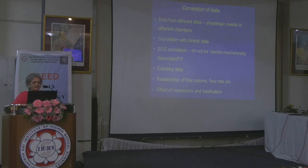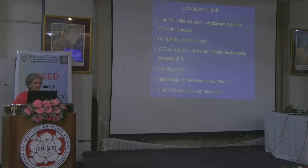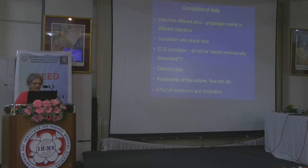Data from different sites — that is, physiological events in different chambers — you should know and correlate with the clinical data you have before going to the cath lab. You should always look at the ECG and correlate the pressure. Don't dissociate between the ECG and the pressure trace. You should also look at the simultaneous oximetry data and understand the relationship of flow, volume, and flow rate through the gradients measured in the cath lab, and the effect of maneuvers.